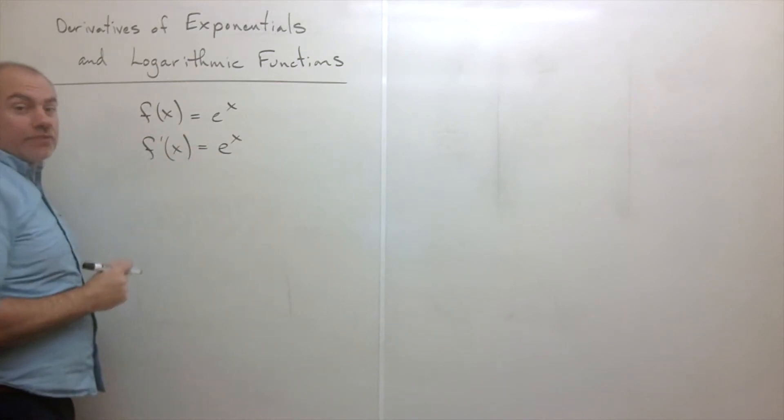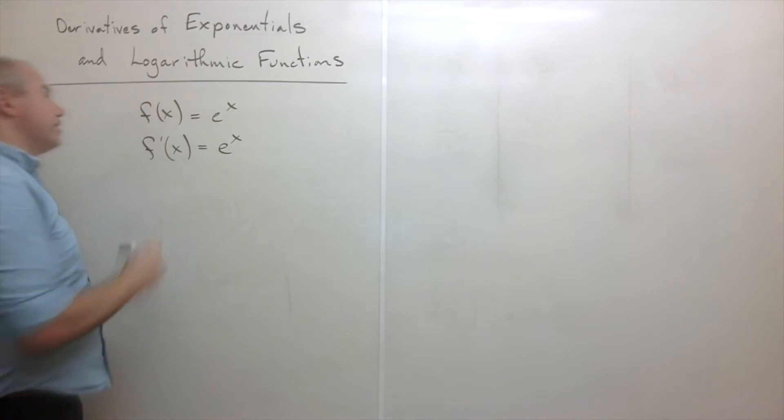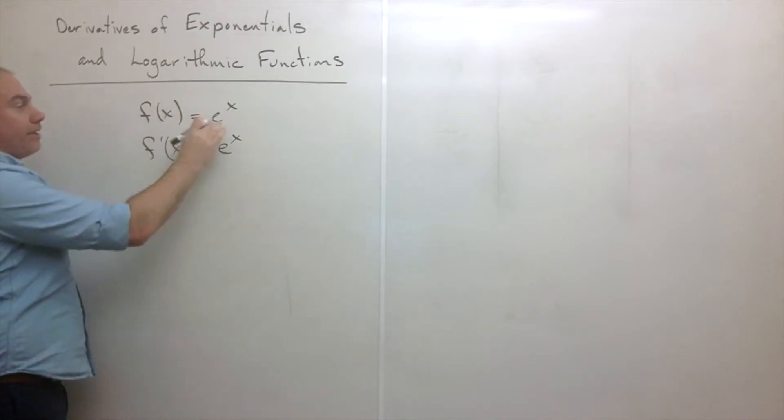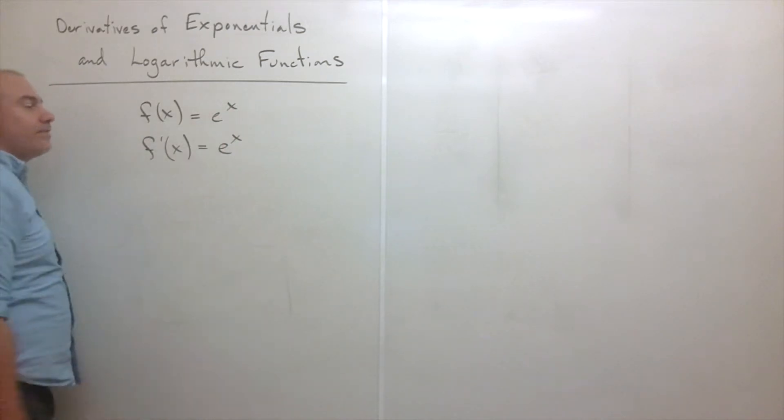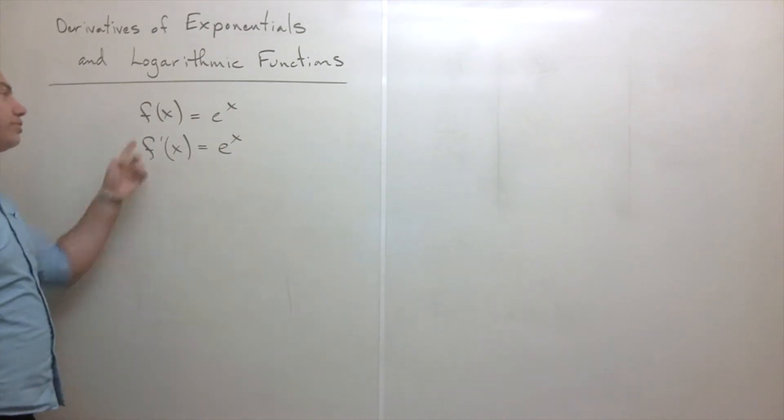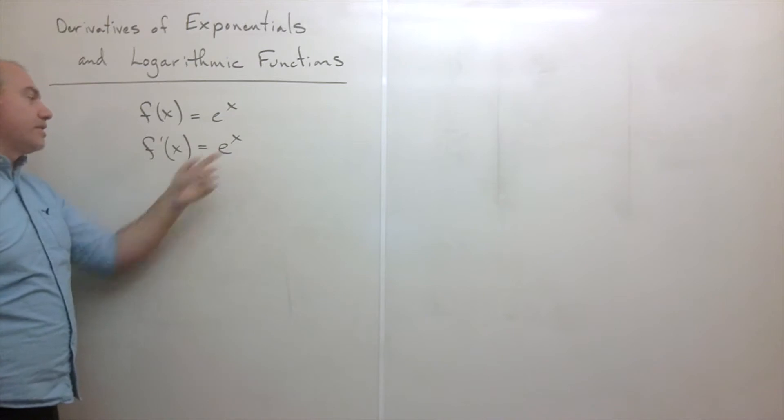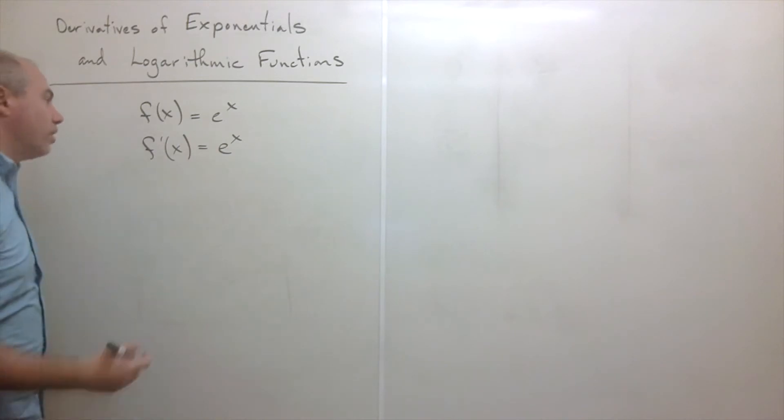That's a very special property — it's a very special function. The derivative of e to the x is e to the x.